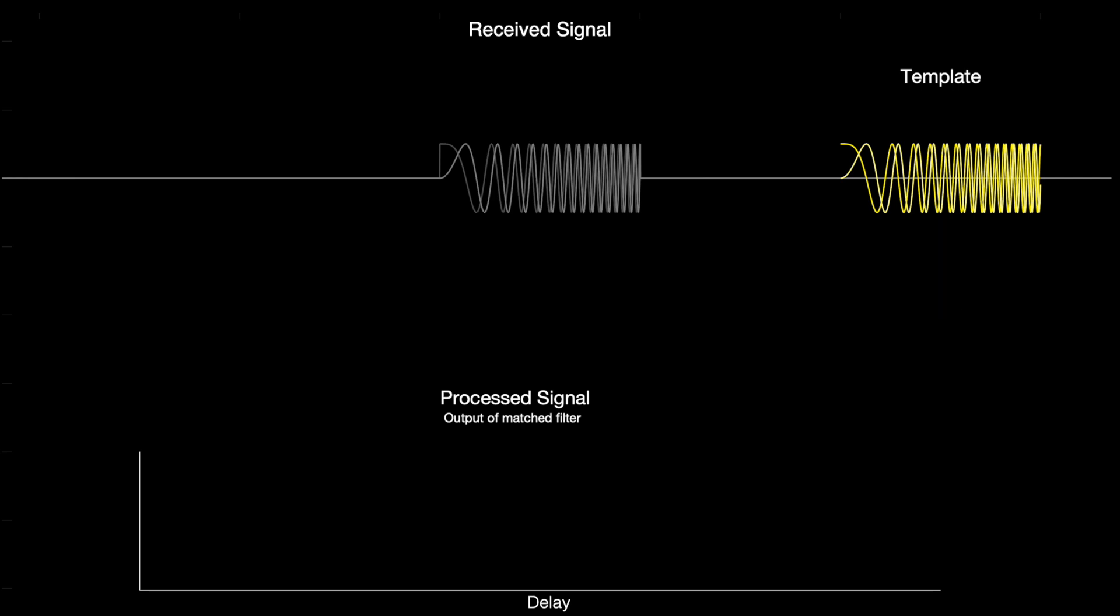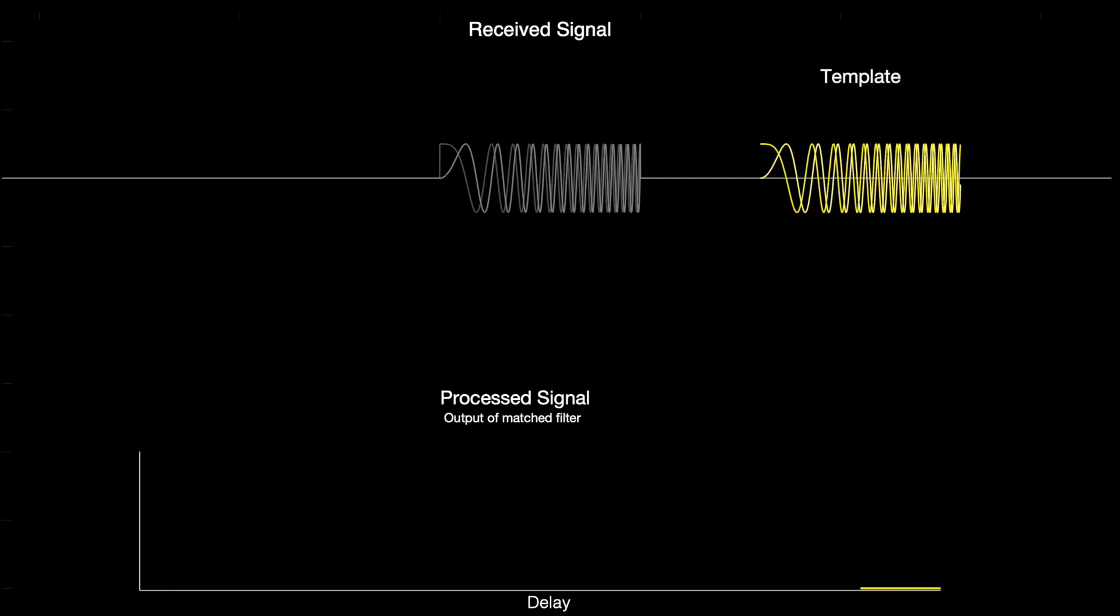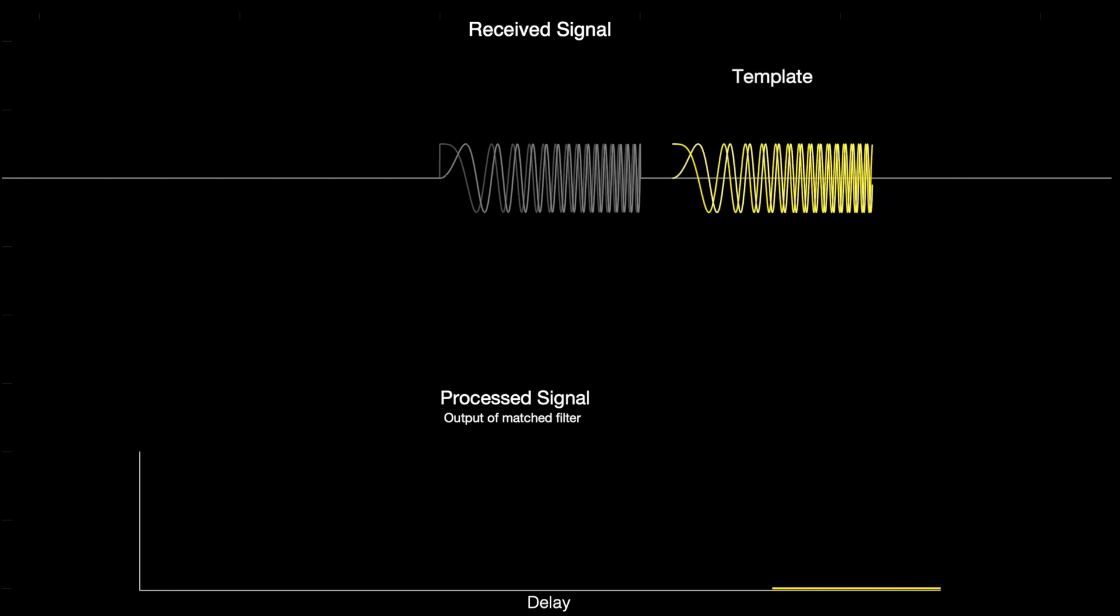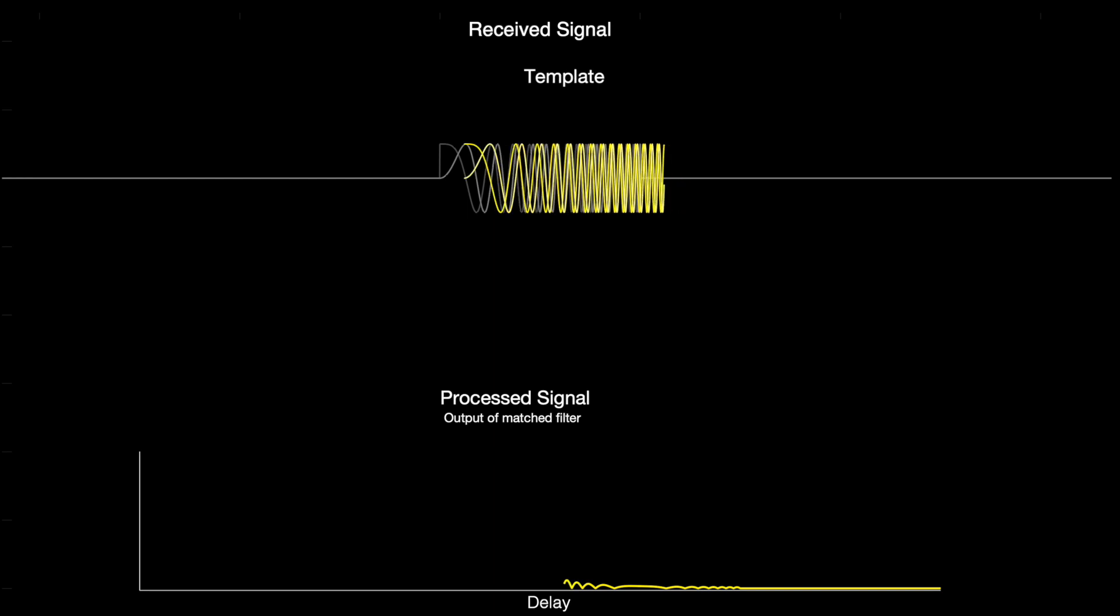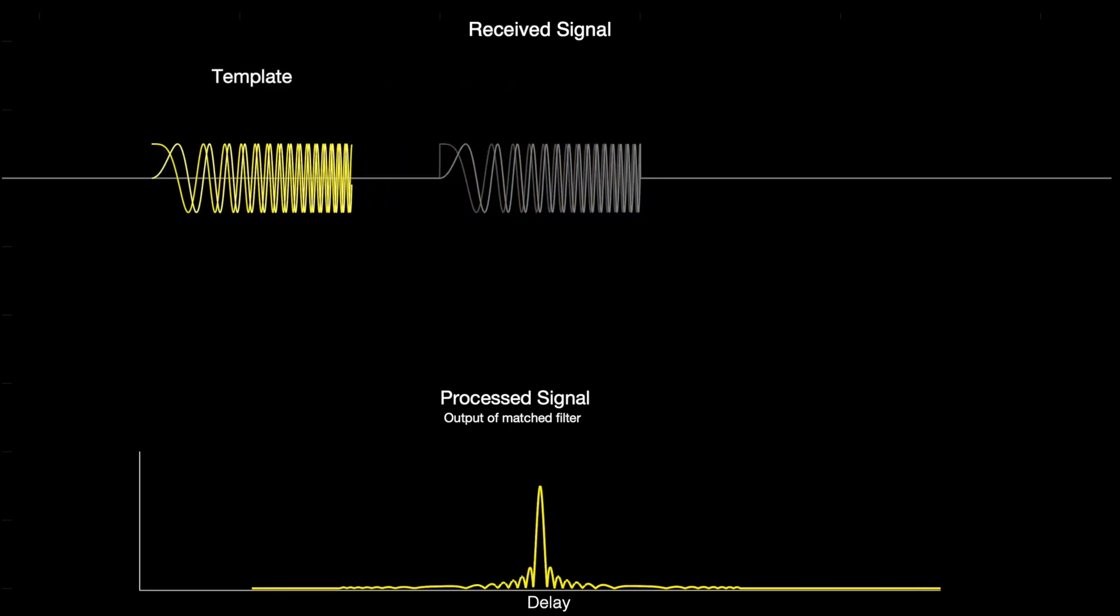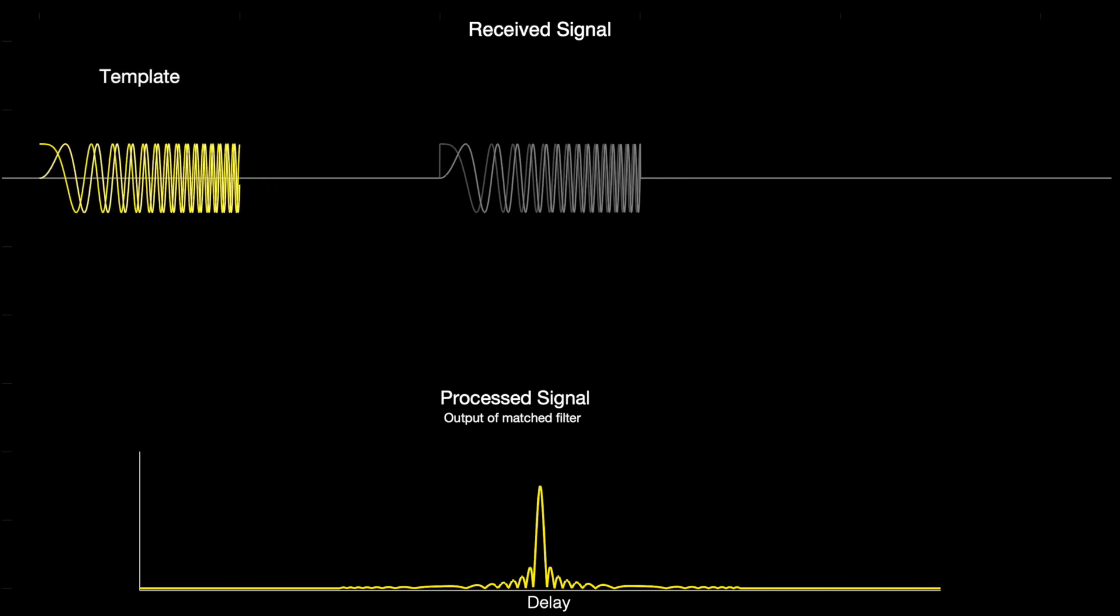So now let's sweep this template across the received signal and see how they correlate. Now once again, when the received signal is zero, there's zero correlation. And then when the template and the pulse start to overlap, there is, well, actually not a whole lot of correlation here because we're overlapping a signal at two different frequencies. It's not until the template and the echo pulse line up right on top of each other before we start to see that really strong correlation. But then it quickly falls away as the frequencies once again are mismatched.